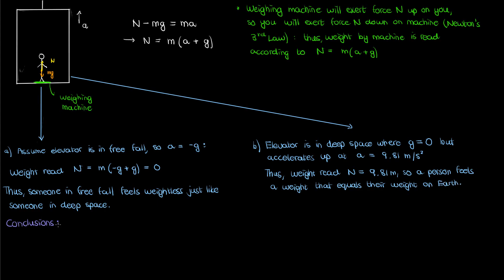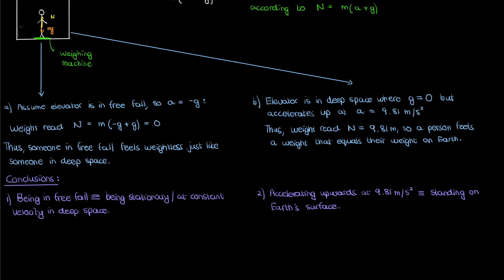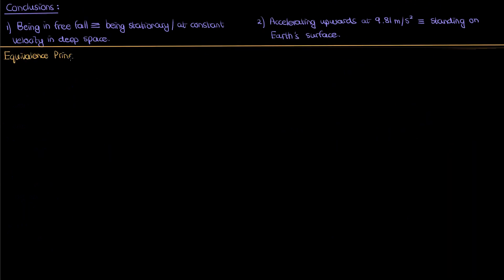So what do we conclude from these two scenarios? Well we can conclude from the first scenario that the situation of freefall is similar to the situation of being stationary or at a constant velocity in deep space. We can also conclude that accelerating upwards at a rate equal to the Earth's gravitational acceleration is similar to the situation of just standing on Earth. The core idea behind general relativity isn't just that these pairs of situations are similar to each other, it's that they are equivalent to each other.